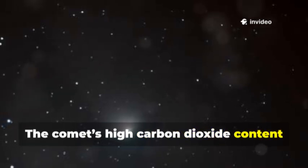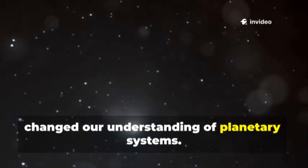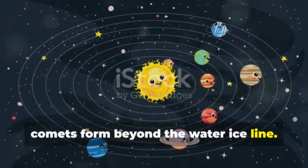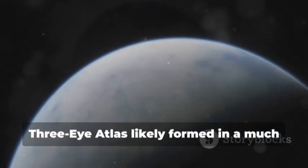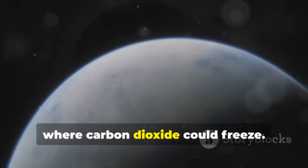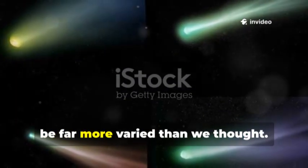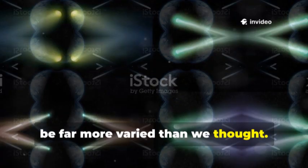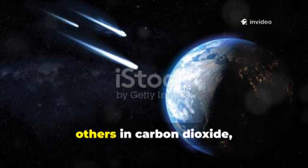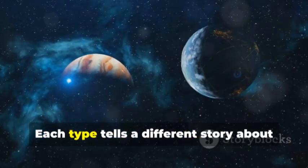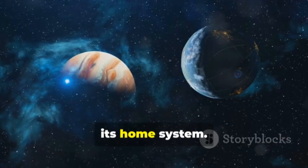The comet's high carbon dioxide content changed our understanding of planetary systems. In our solar system, comets formed beyond the water ice line. 3I Atlas likely formed in a much colder place where carbon dioxide could freeze. This means comets across the galaxy could be far more varied than we thought. Some might be rich in water, others in carbon dioxide, methane, or nitrogen.